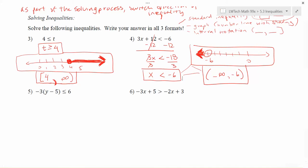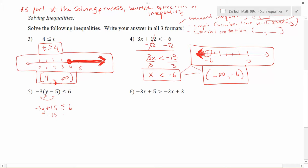Let's try another example — number five. We want to get y by itself. Notice we have parentheses, so we distribute. On the left-hand side: negative three times y is negative 3y, negative three times minus five gives plus 15. I'm only doing things to one side, so I don't need to think about switching the inequality direction. Next I want to get y by itself, so I subtract 15 from each side. Subtracting doesn't change the inequality, so I still have less than or equal to. On the right, six minus 15 gives negative nine. Now I need to divide by negative three.